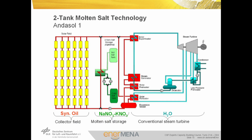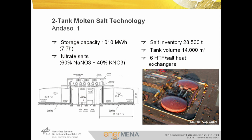An indirect molten salt storage system was first implemented at the Andasol power plants. Here, oil is used as HTF and energy is transferred to the salt via a heat exchanger during charging. During discharge, energy is transferred back from the molten salt to the thermal oil, which is then used to generate steam. The temperature difference between hot and cold tank is about 90°C, so the mass-specific storage capacity is about one-third of the SOLAR2 system.